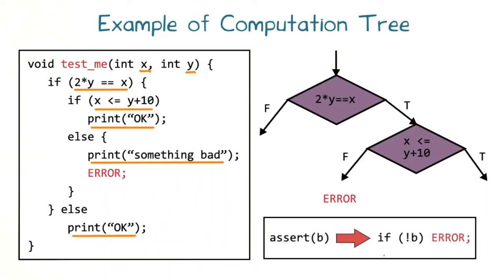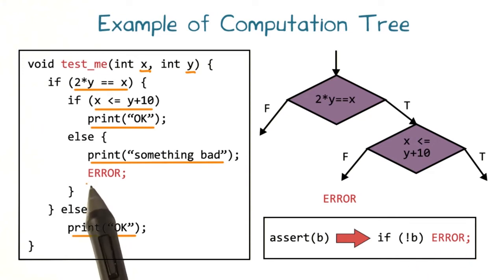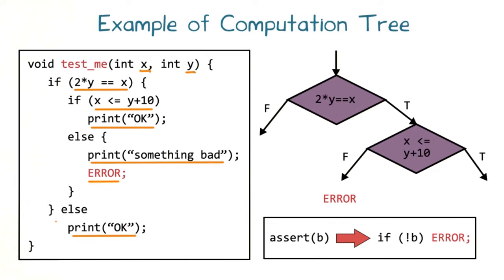In general, we will represent an assertion by performing a test — if the test fails, the program reaches a distinguished error label. Because this program has no unbounded loops, the computation tree is finite.